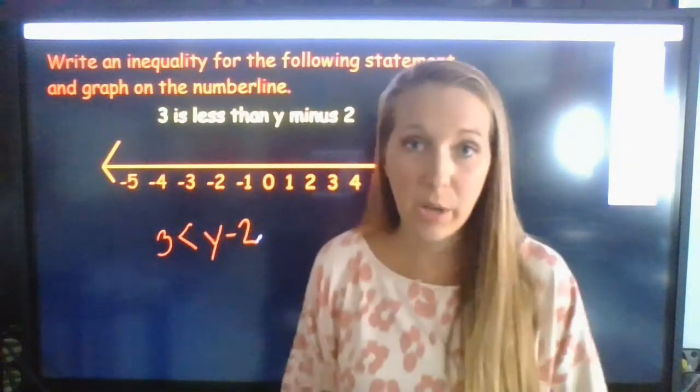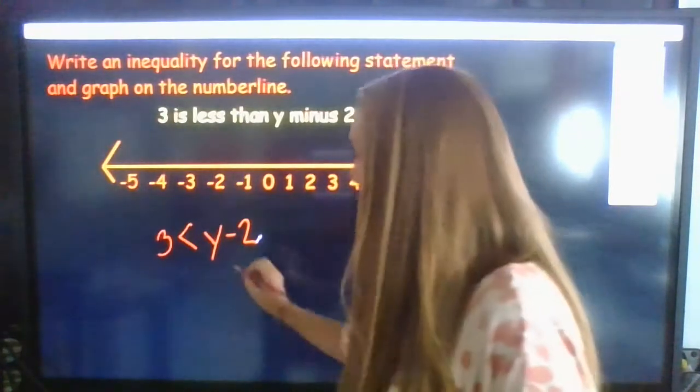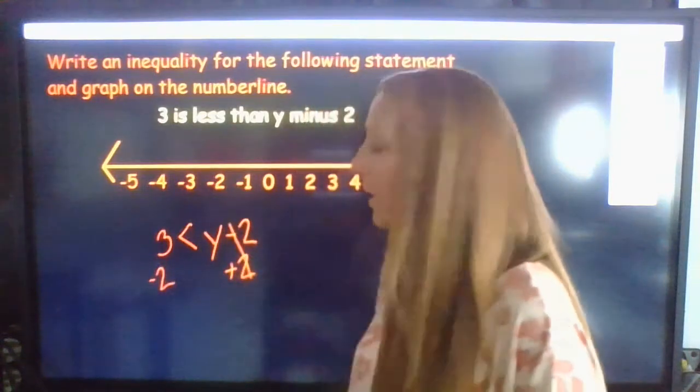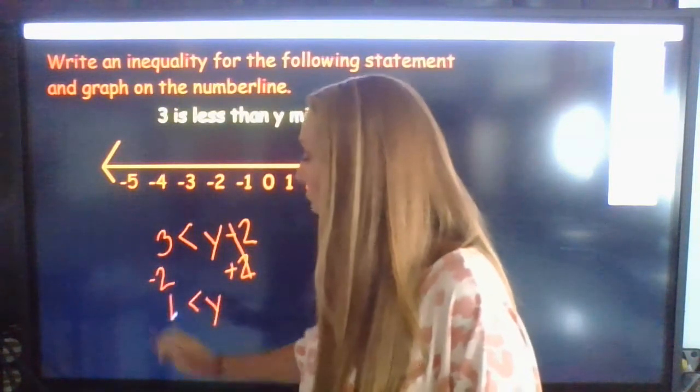Now, we still have to solve it. We have to isolate the variable by doing inverse operations. So we're going to add 2 to both sides. That cancels out. Then we have y is greater than 1.